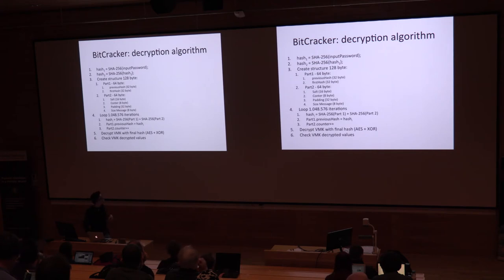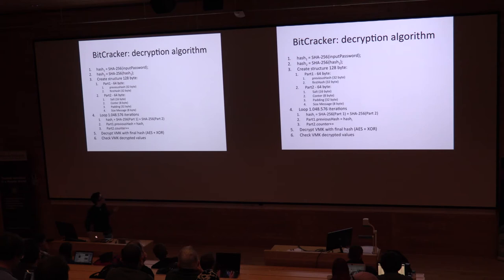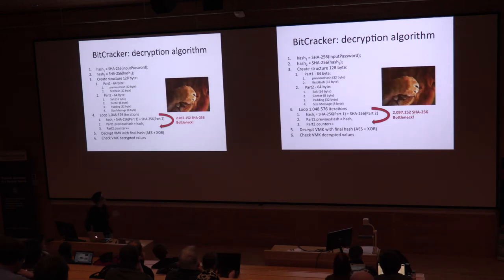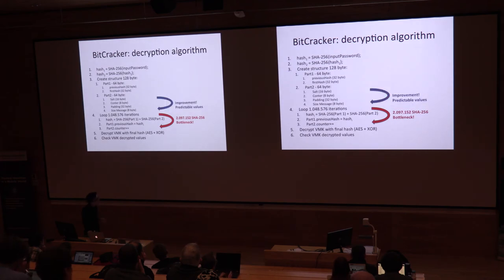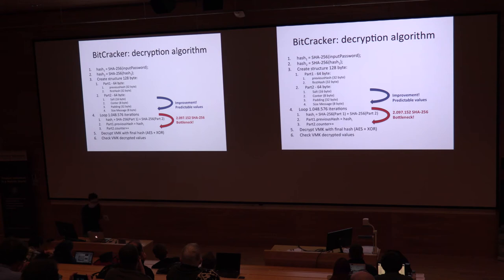As I explained before, BitCracker decrypts the Volume Master Key and then checks the values of the Volume Master Key. If they are compliant with the standard, the input password was the right password. Looking at this algorithm, we can see that the bottleneck is the main loop, because for each password BitCracker must perform more than two million SHA function calls. So it's very important to perform each iteration as fast as possible and save as many mathematical operations as possible. For this reason, I've introduced a second improvement concerning the second part of the input structure, because we can make some predictions about the values of those fields during each iteration of the main loop.